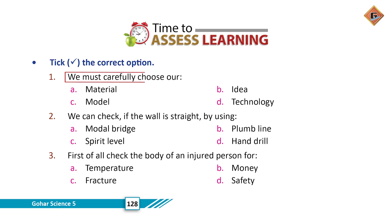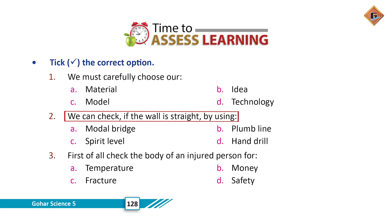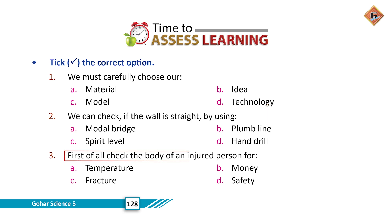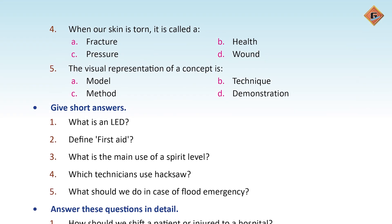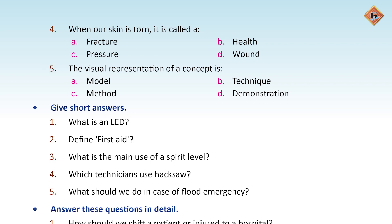Tick the correct option: We must carefully choose our materials for model making. We can check if the wall is straight by using a plumb line — so that is the correct option. First of all, check the body of an injured person for fracture. When our skin is torn, it is called a wound, so D is the correct option. The visual representation of a concept is a model — agar aap kisi concept ko aankhon ke saamne represent karna chahte hain, toh usse modeling kehte hain.